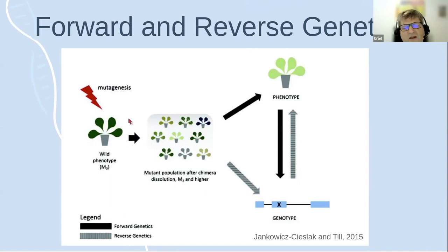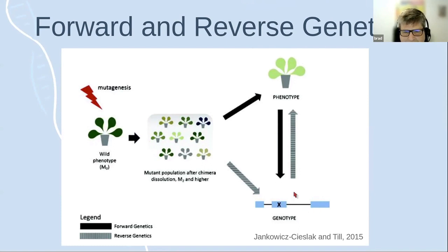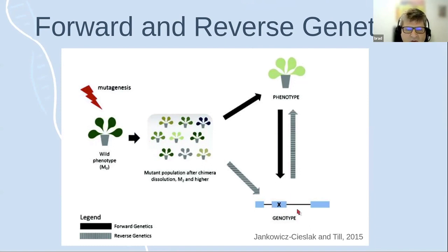Starting in the 1990s for plants, people were developing methods to specifically target mutations in genes. In reverse genetics, you start with the genotype and ask a question — for example, 'I think this gene is important for leaf color' — and mutate it to address that hypothesis. That's called reverse genetics because you start with the genotype and end up with the phenotype.